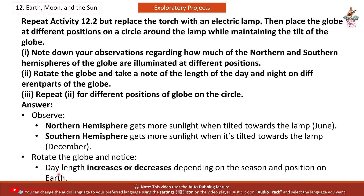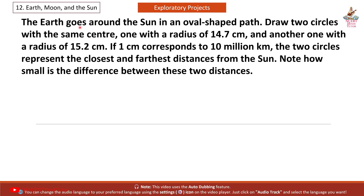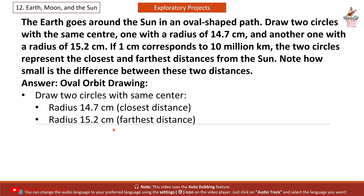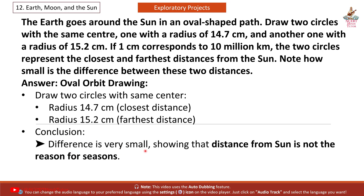Answer: Observe — the Northern Hemisphere gets more sunlight when tilted towards the lamp in June; the Southern Hemisphere gets more sunlight when tilted towards the lamp in December. Rotate the globe and notice that day length increases or decreases depending on the season and position on Earth. The Earth goes around the Sun in an oval-shaped path. Draw two circles with the same center — one with a radius of 14.7 cm and another with a radius of 15.2 cm. If 1 cm corresponds to 10 million km, the two circles represent the closest and farthest distances from the Sun. The difference is very small, showing that distance from the Sun is not the reason for seasons.